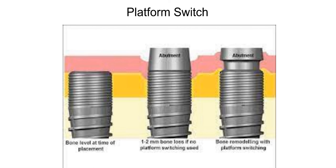For doctors that like to place subcrestal, having platform-switched implants makes seating prosthetics a lot easier because of that connection moving away from the bone. You limit any type of interference you might have with a non-platform-switched design. Most doctors want to place level with the crest, epicrestal, or subcrestal — because they're anticipating some of that bone loss. Seating the prosthetics is a lot easier when you have a platform-switched design for internal hex or conical.